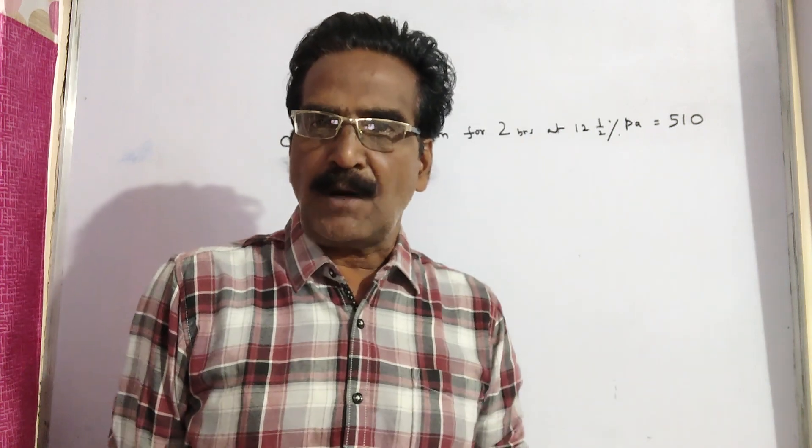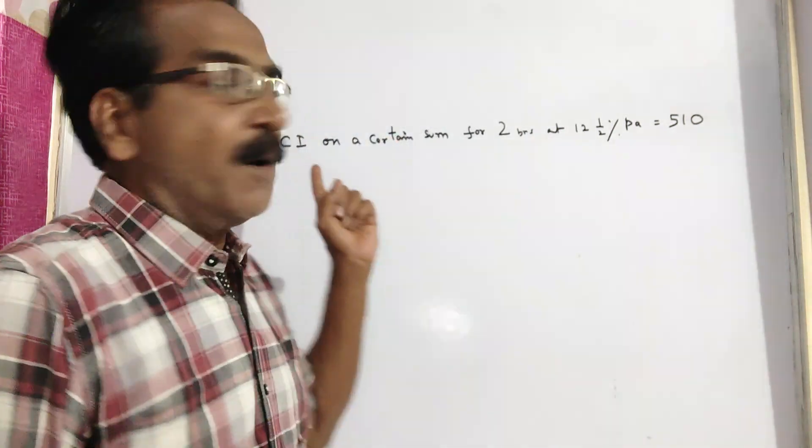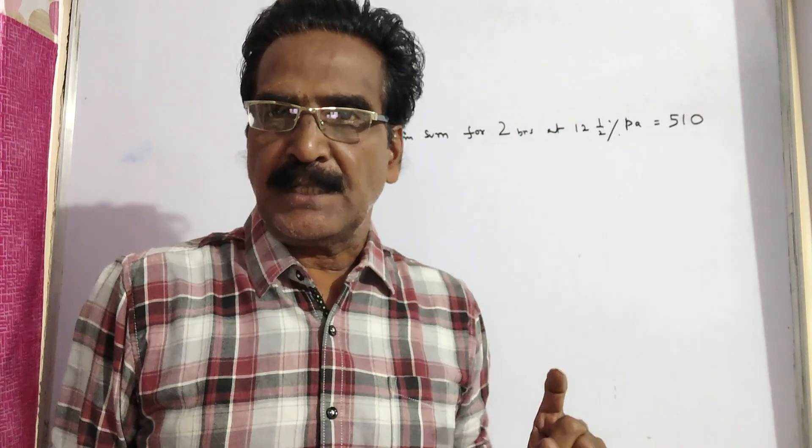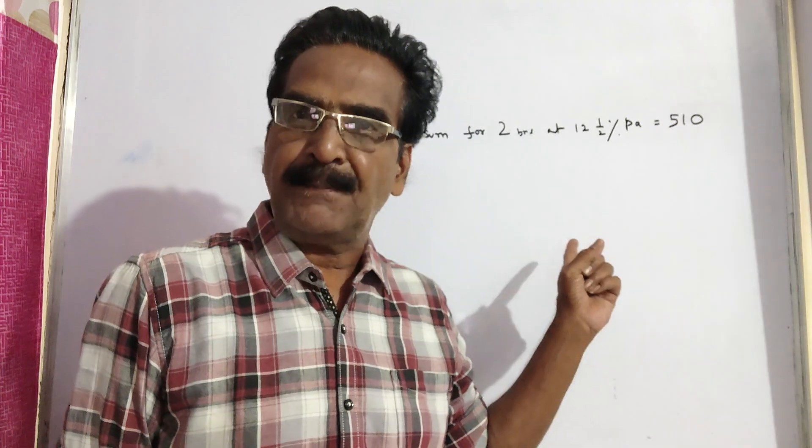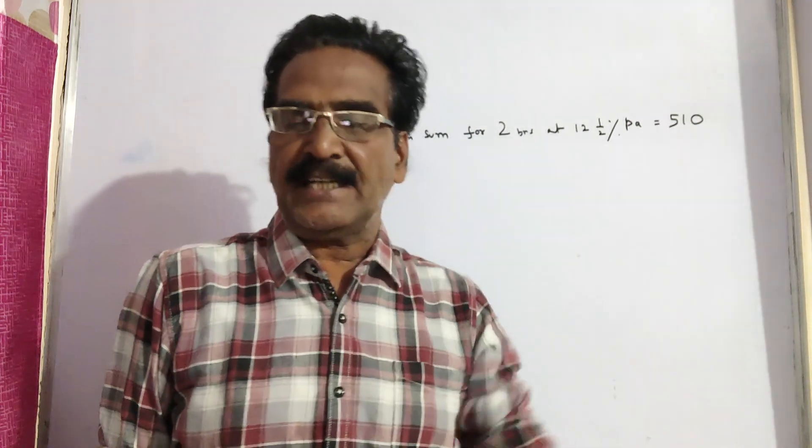Friends, the problem is given in the description box. See, the compound interest on a certain sum for 2 years at 12.5% per annum is equal to 510 rupees.